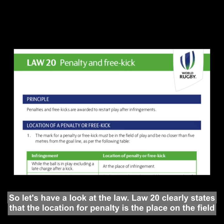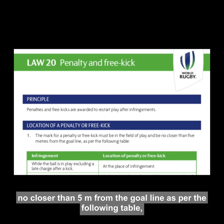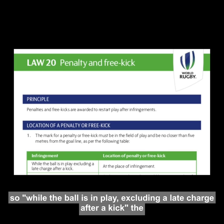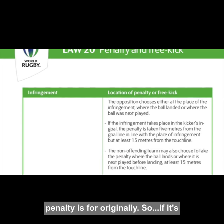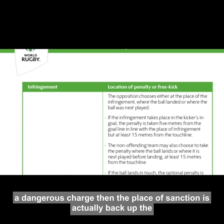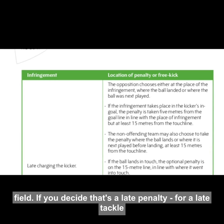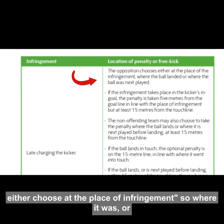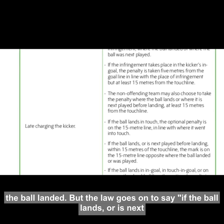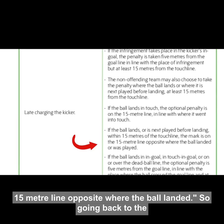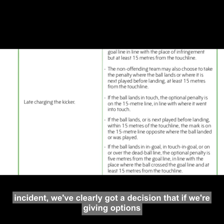Let's have a look at the law. The law clearly states that the location for a penalty is the place on the field no closer than five metres from the goal line. While the ball is in play, excluding a late charge after a kick, the location of the penalty is at the place of infringement. This is where we need to be clear on what the penalty is for. If it's a dangerous charge, the place of sanction is back up the field. If it's a late penalty for a late tackle on the kicker, the law states the opposition can choose: at the place of infringement, or where the ball landed, or was next played. If the ball lands within 15 metres of the touchline, the mark is on the 15-metre line opposite where the ball landed.